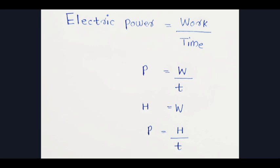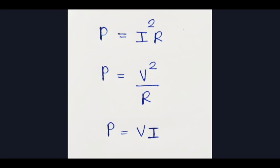H is equal to I squared RT, H is equal to V squared by R into T, H is equal to VIT. When we divide by time T, T will cancel. The electric power equations become: P is equal to I squared R, P is equal to V squared by R, P is equal to VI.